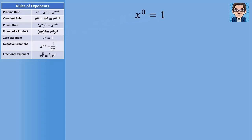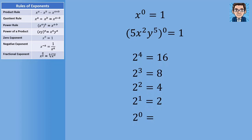The next rule tells us that anything to the zero power is one. So even something complicated raised to the zero power still gives us one. To see why, look at powers of two: going up, we multiply by two each time, so going down we divide by two. Two to the fourth is 16, two to the third is 8, two to the second is 4, two to the first is 2 — and dividing by two again gives us one. That demonstrates why something to the zero power equals one.